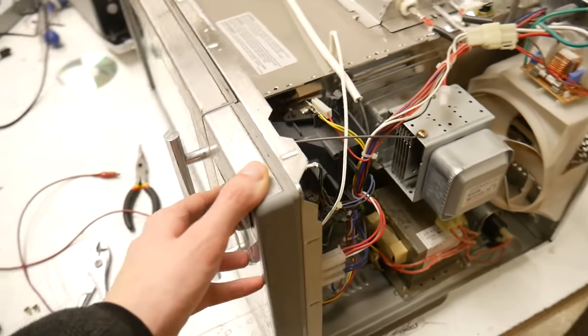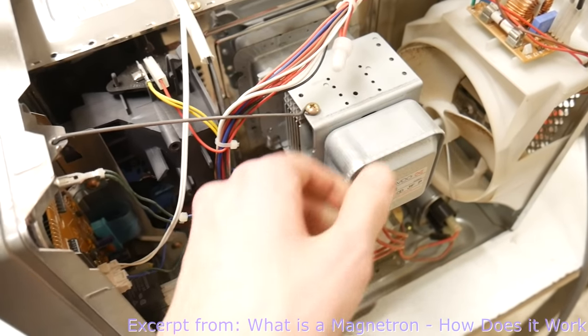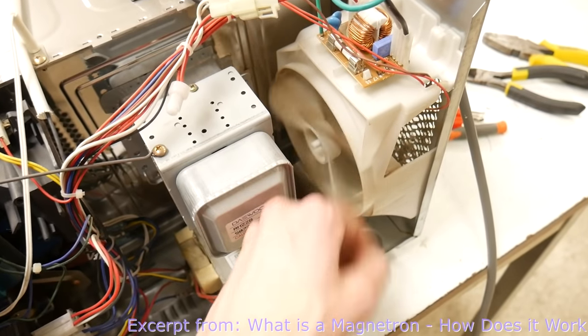Alright so here's what the inside of a microwave looks like. Here we see the magnetron which emits waves into the main cavity, that's this part over here. Oh and it's cooled by this fan.